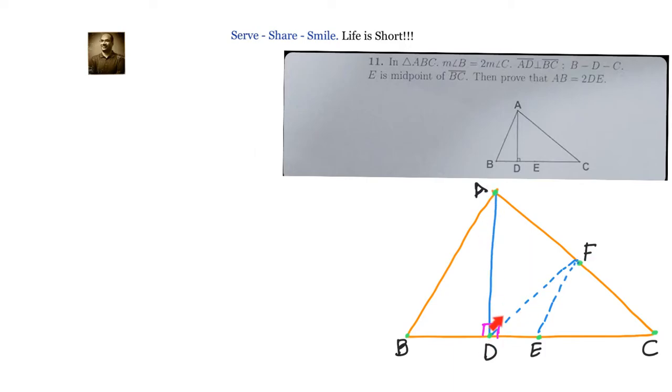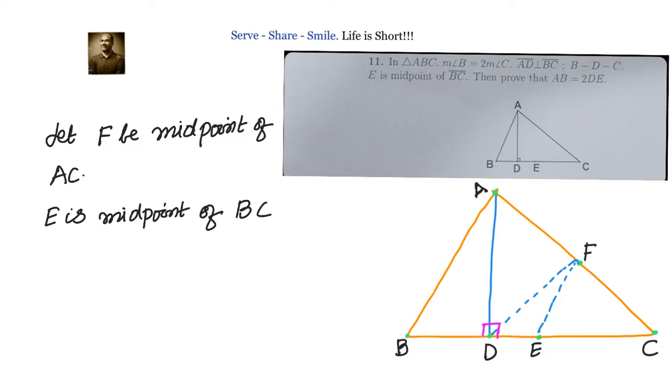Let us write down what we discussed. First, let F be the midpoint of AC. E is midpoint of BC and F is midpoint of AC. Therefore, by midpoint theorem, EF is parallel to AB and EF equals half of AB.